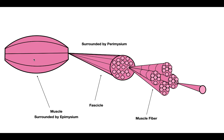The third level of organization is going to be the muscle fiber. Muscle fibers are individual muscle cells, and these are surrounded by endomysium. The second-to-last level of organization is going to be the myofibrils. The myofibril is a linear arrangement of contractile fibers — basically sarcomeres arranged adjacent to each other — which makes up the myofibril.